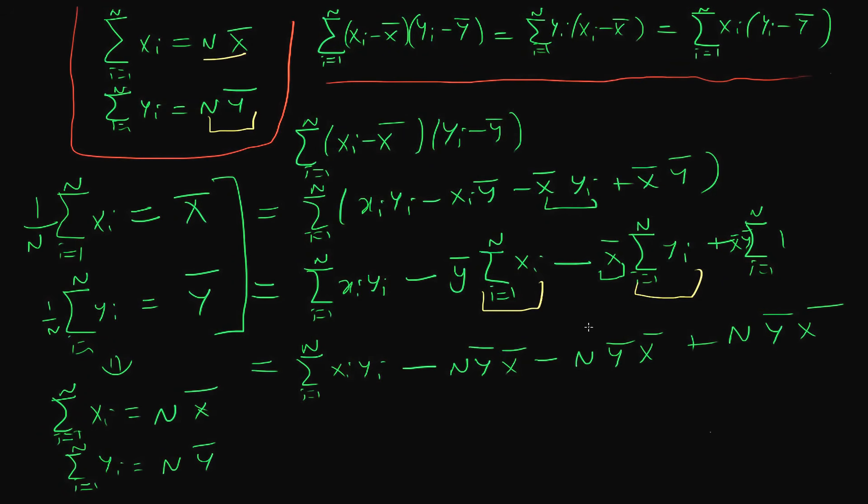We can actually use these things derived from the top left of the screen to go the other way. We can write n y bar as the sum of i equals 1 to n of yi. So that means we can write this whole thing as the sum of i equals 1 to n of xi times yi minus the sum of x bar times the sum of yi from i equals 1 to n.